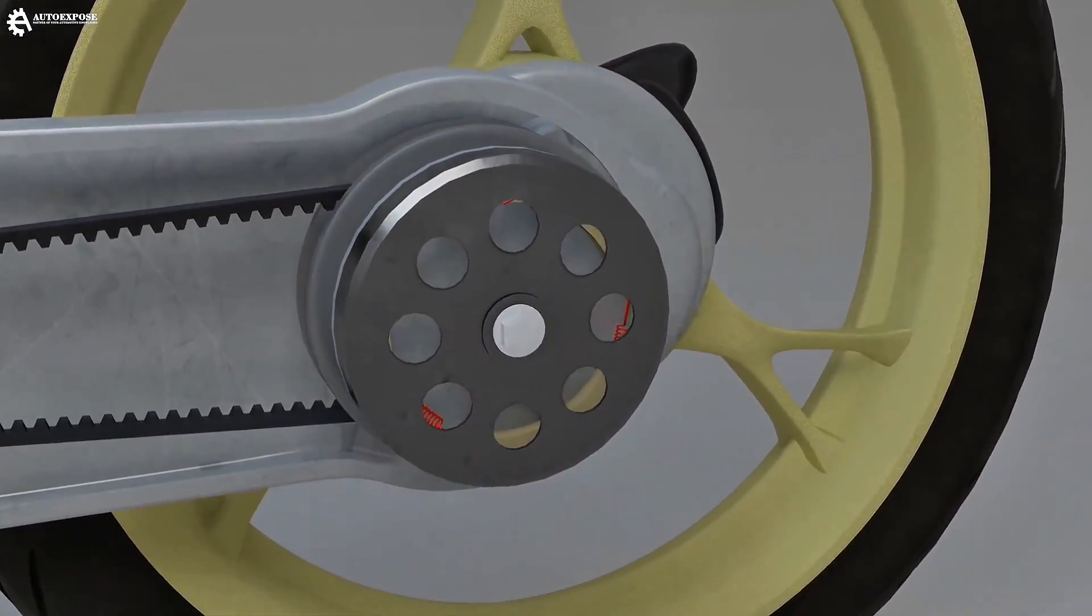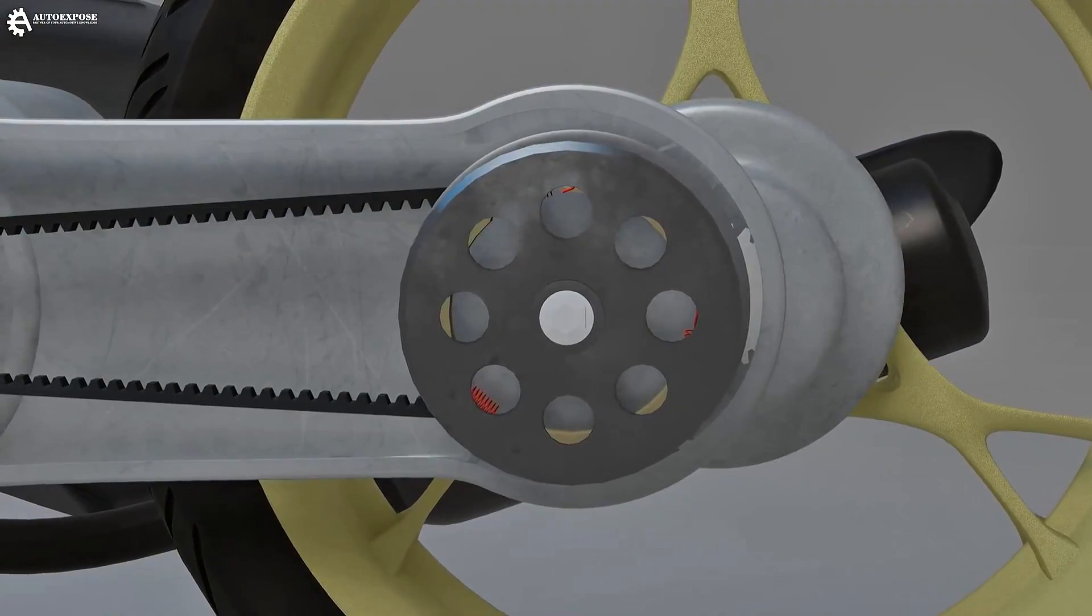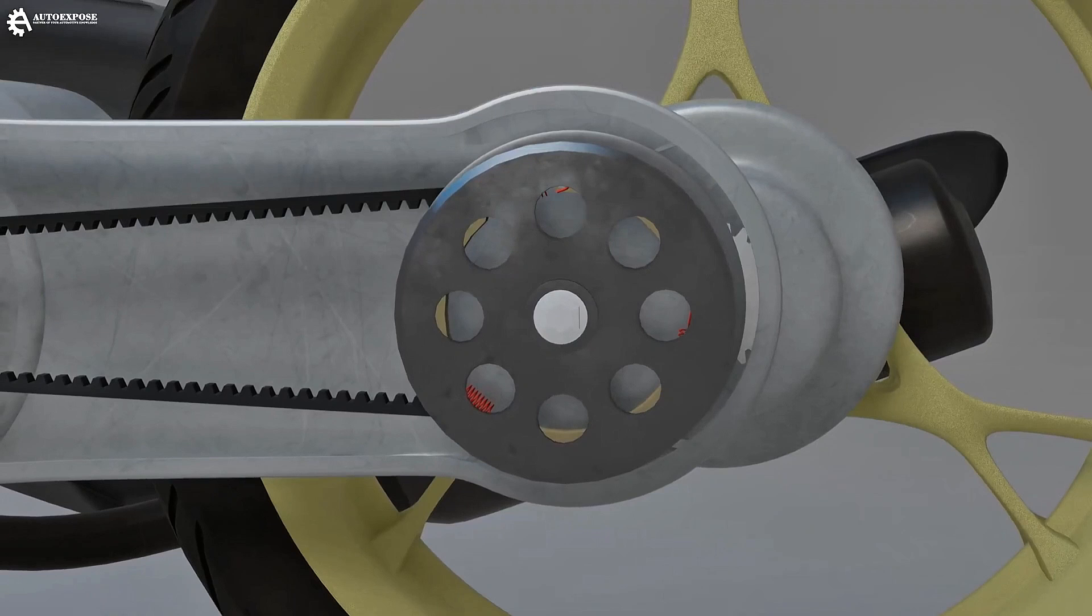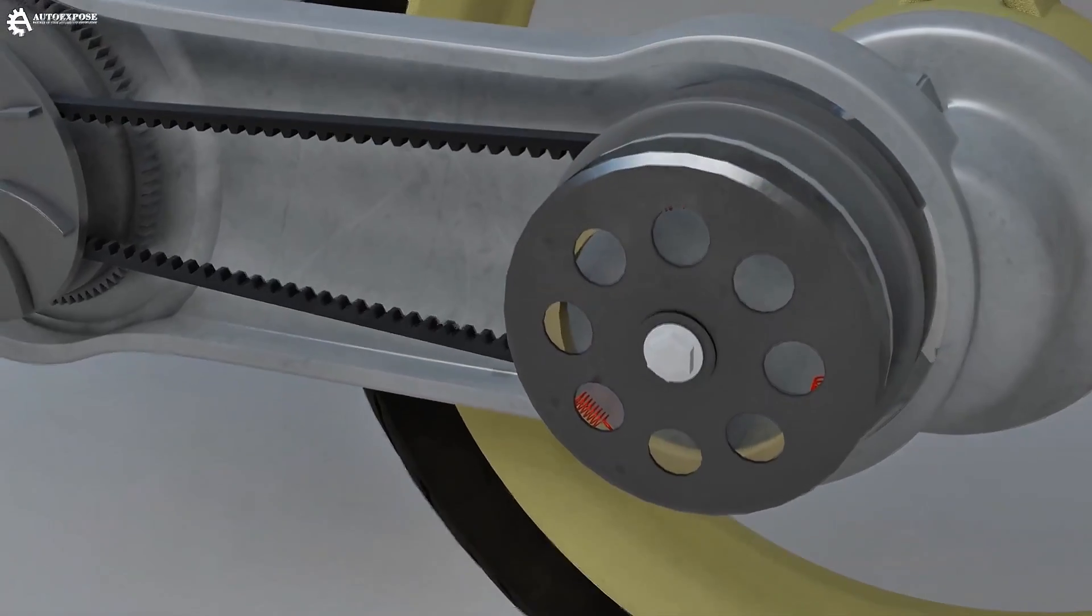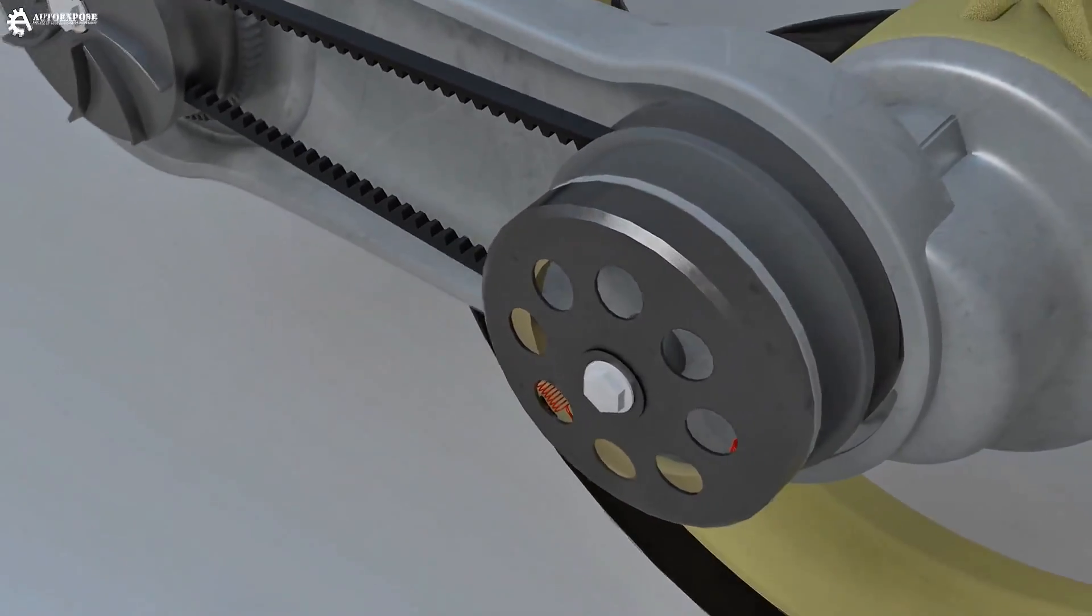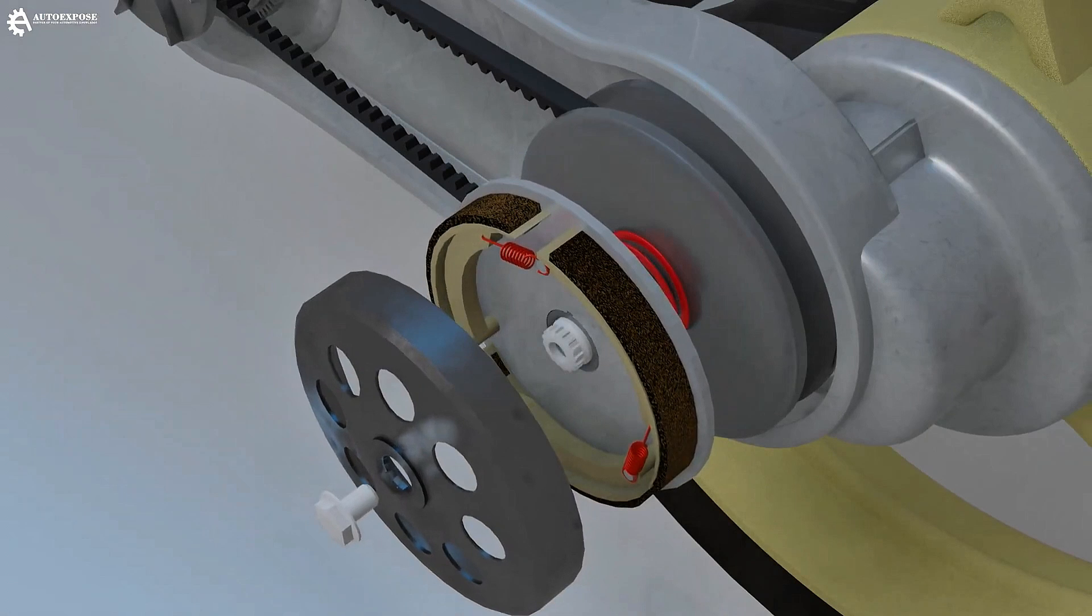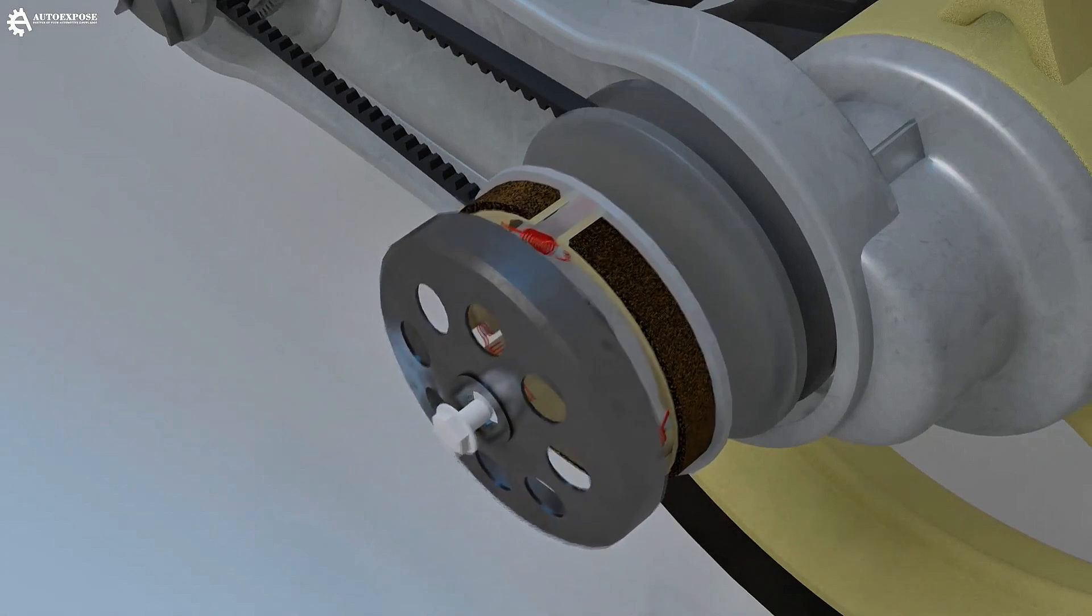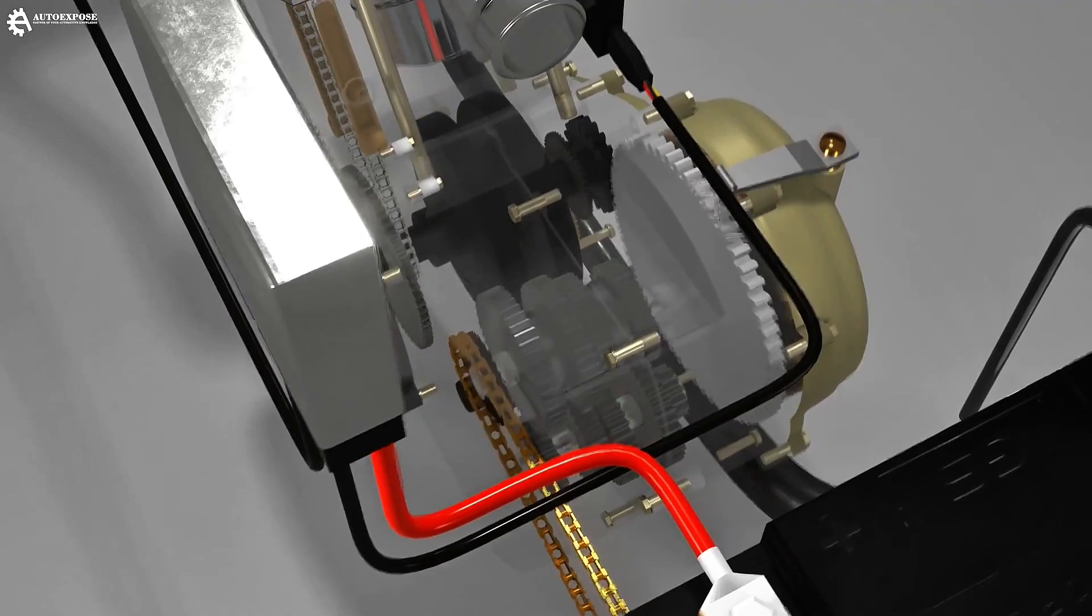For those who don't know, automatic motorcycles do have a clutch. Its function is almost the same as a regular clutch, to disconnect and connect engine rotation to the wheels. However, this clutch can operate automatically. So, to understand the engine braking mechanism on an automatic motorcycle, we need to understand how the clutch works.